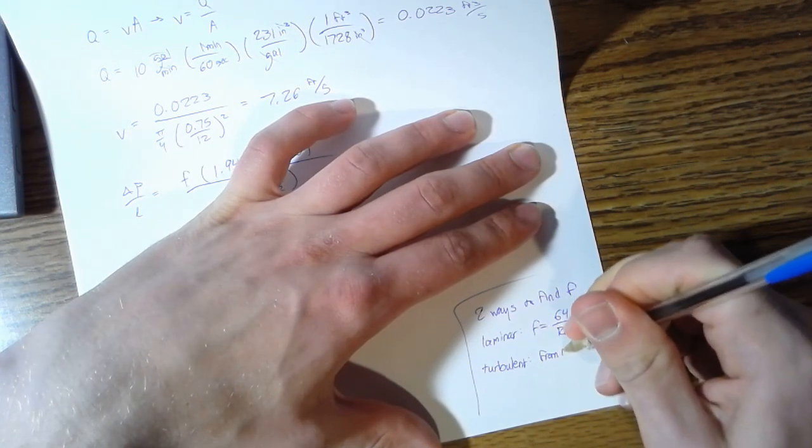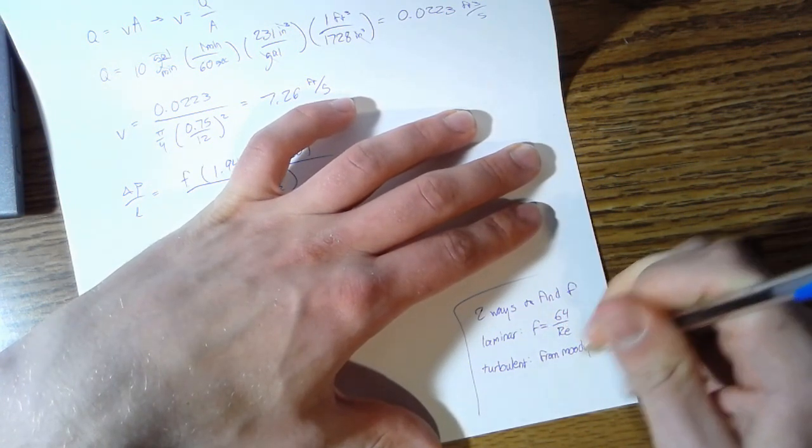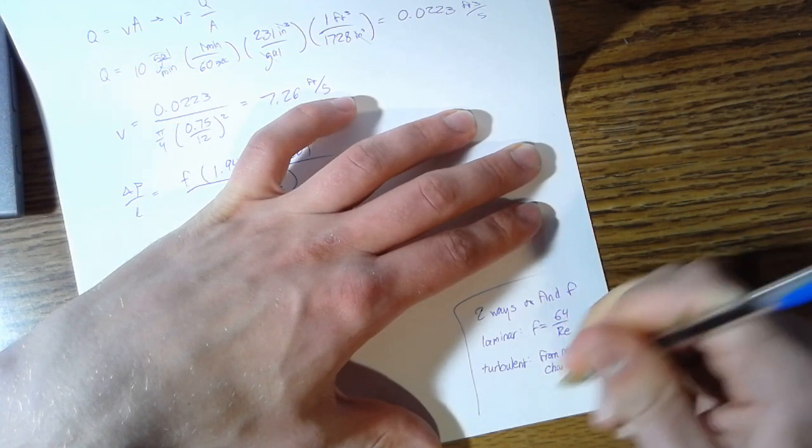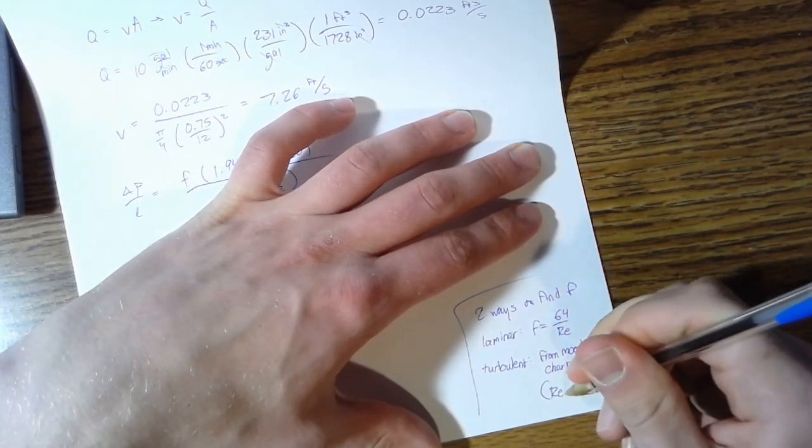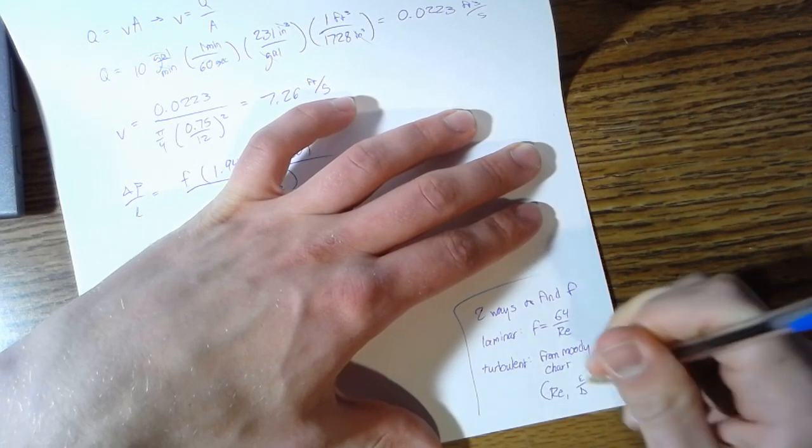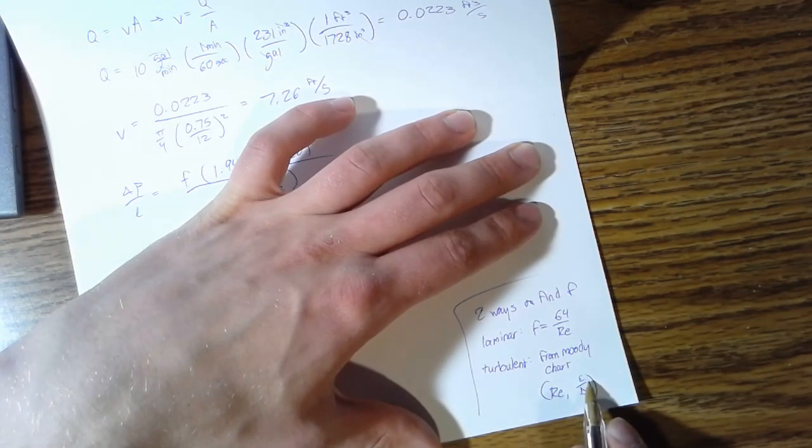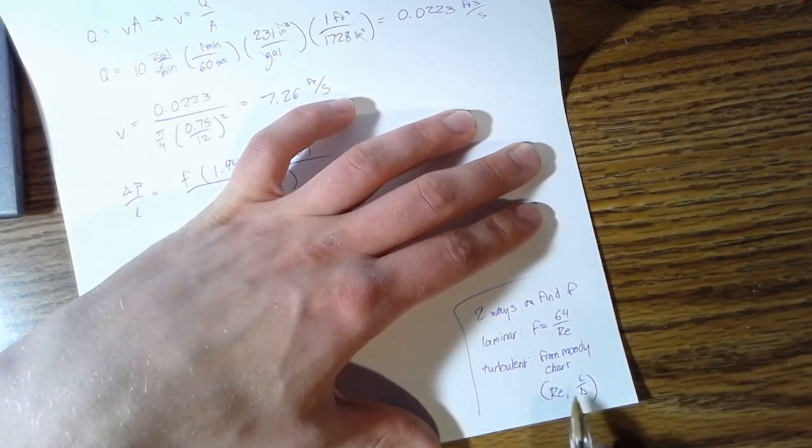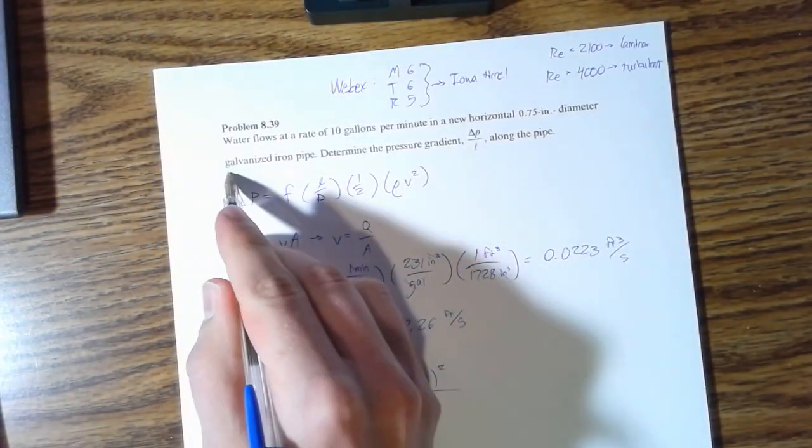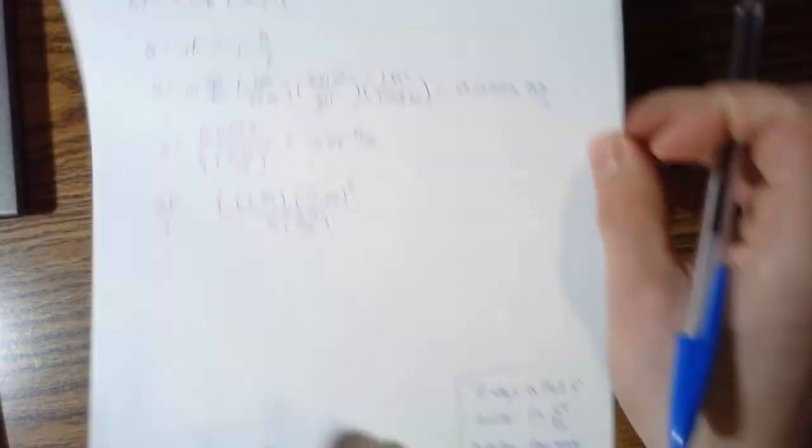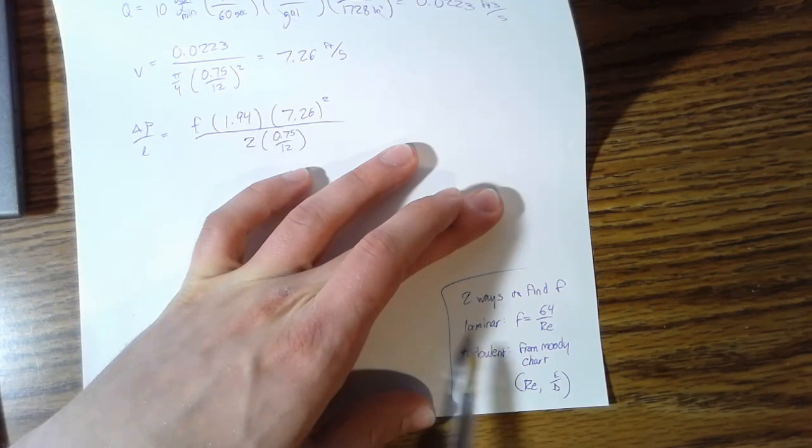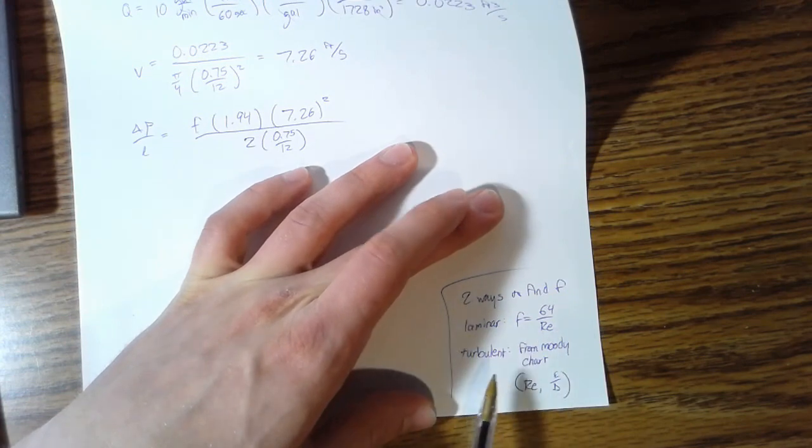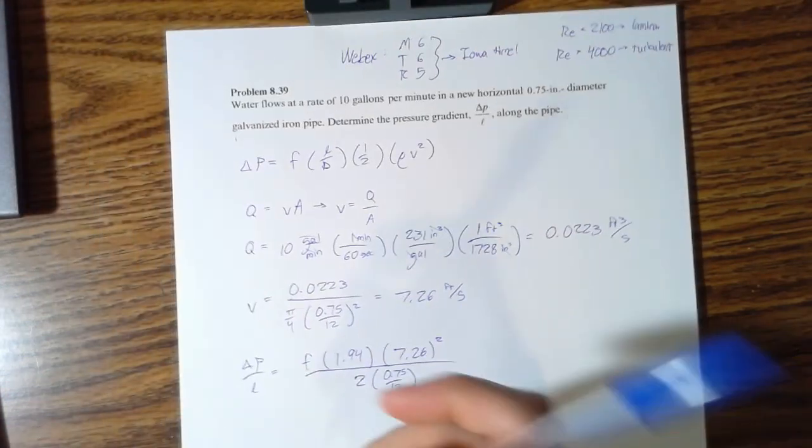But for turbulent, you use the Moody chart, where you'll have a function of your Reynolds number and then the relative roughness epsilon over D. Epsilon is based off of the type of pipe you have—in this case we have galvanized iron. But what you want to do to find this f: you need to figure out whether or not you're in laminar or turbulent first.